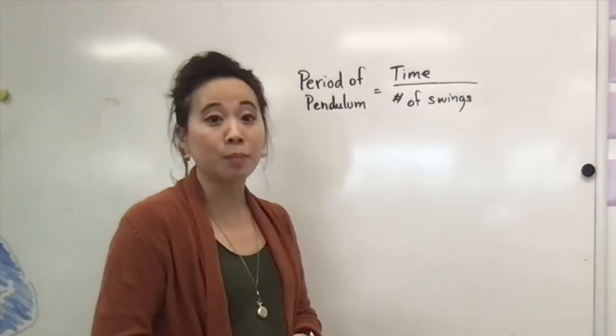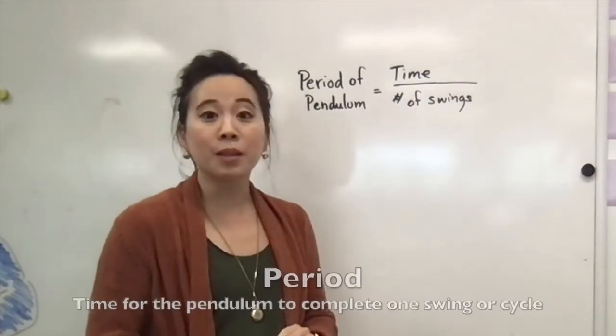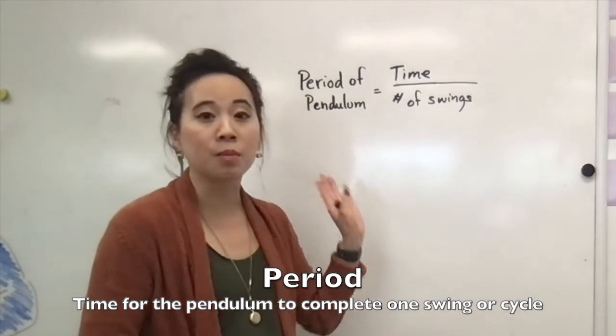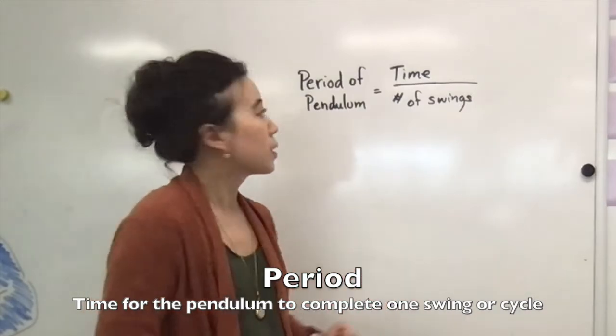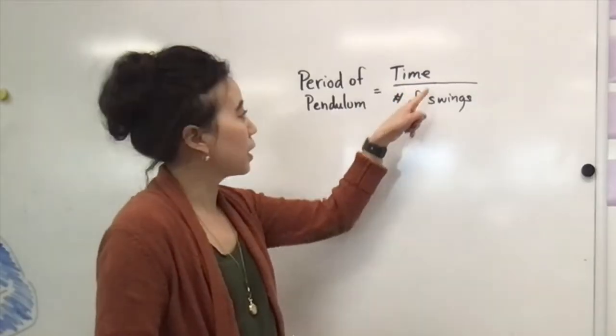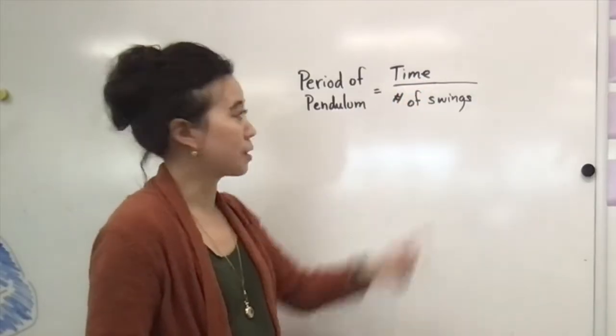During this lab, you need to be able to calculate the period of a pendulum. Remember that the period of a pendulum is the time it takes for the pendulum to complete one cycle or one full swing. So the period equals the time the pendulum was swinging divided by the number of swings.